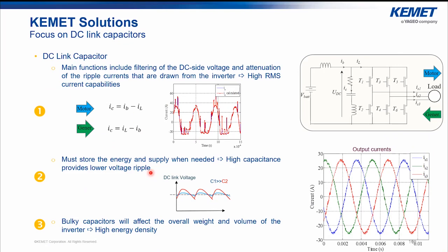Why focus on the DC link? The DC-link capacitors play an important role because we have a low-voltage system — 48 volts — and high power, almost 15 kilowatts for the P0 architecture and up to 30 kilowatts for the hybrid 48-volt inverters, which leads to very high current that can flow through the capacitors. Also, the different operating modes — e-boost or recuperation — mean the electrical machine operates as a motor or generator, leading to different current profiles through the capacitors. The capacitor must be able to withstand very high RMS current.